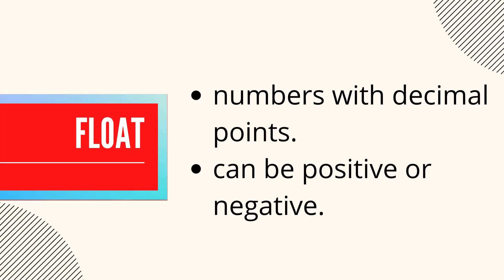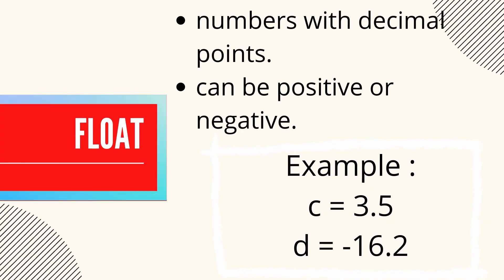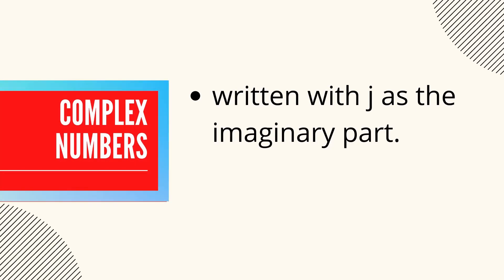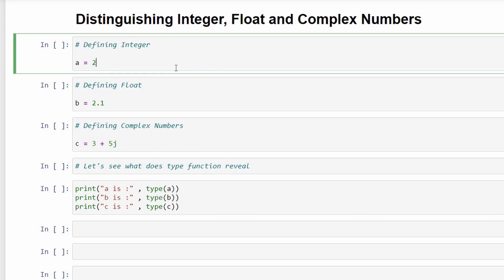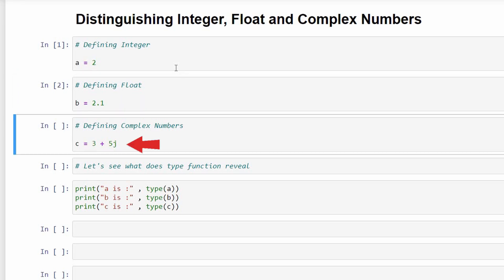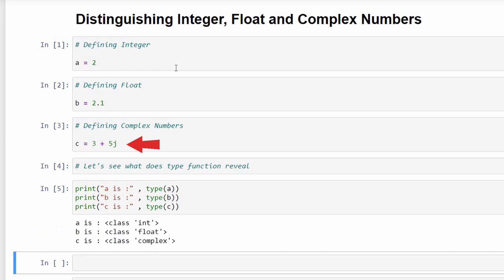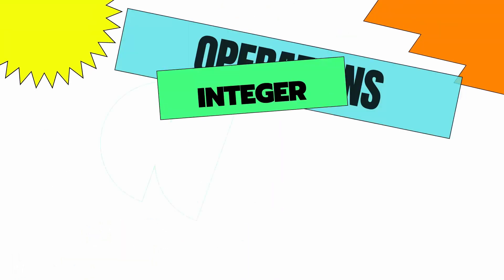Second is float — these are numbers with decimal points. They can also be positive or negative. Examples: c equals 3.5 and d equals minus 16.2. Third are complex numbers — these are numbers written with j as the imaginary part. a is the real coefficient and b is the imaginary coefficient. Examples: e equals 3 plus 5j and f equals minus 5j. Using the type function, variable a (integer 2) is an object of int class, b (value 2.1) is an object of float class, and any variable with j becomes an object of the complex class.